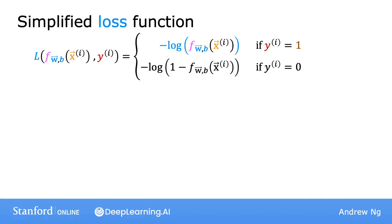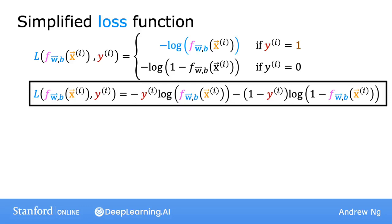You can write the loss function as follows. Given the prediction f of x and the target label y, the loss equals negative y times log of f minus 1 minus y times log of 1 minus f. And it turns out this equation, which we just wrote in one line, is completely equivalent to this more complex formula up here.